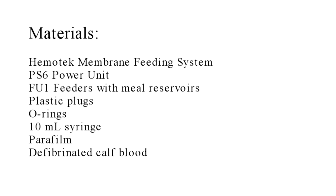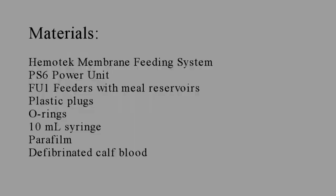Some of the supplies you'll need to get started are a Hemotech Membrane Feeding System, PS6 power unit, FU1 feeders with reservoirs, plastic plugs, black o-rings, a 10 milliliter syringe with needles, parafilm, and defibrillated calf blood.